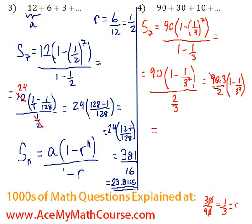So 90 over 2 is just 45. 45 times 3 is 135. Multiply by 1 minus 1 over 3 to the 7.